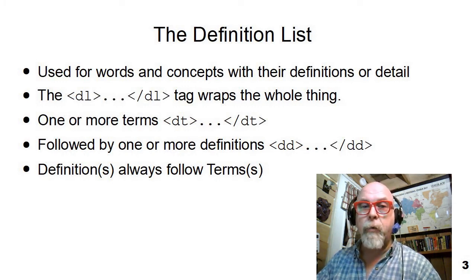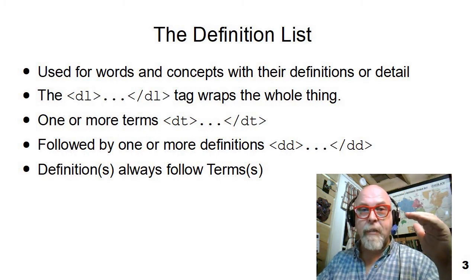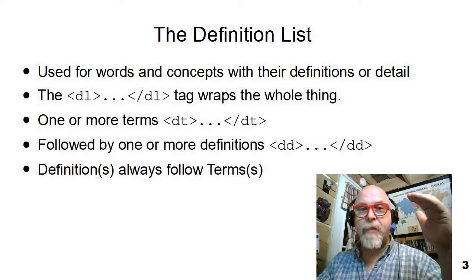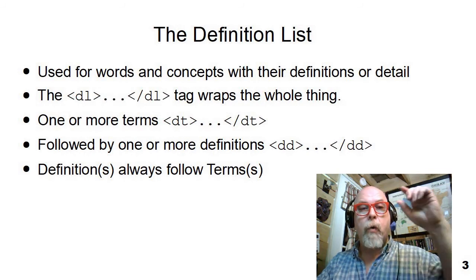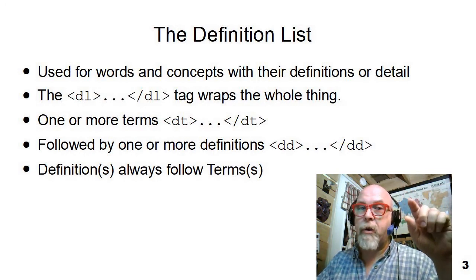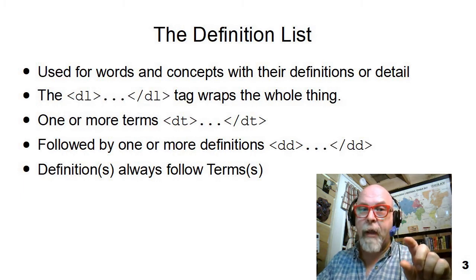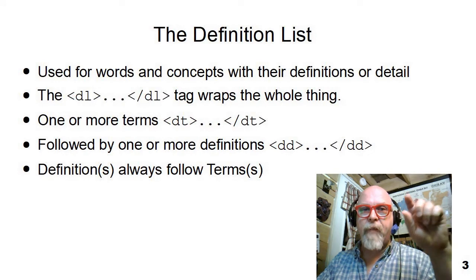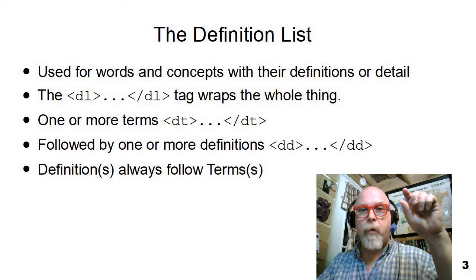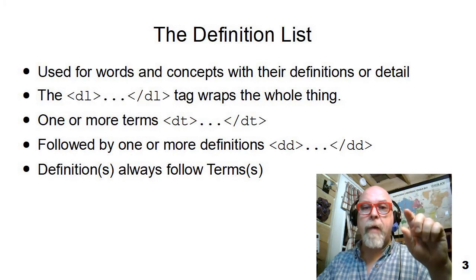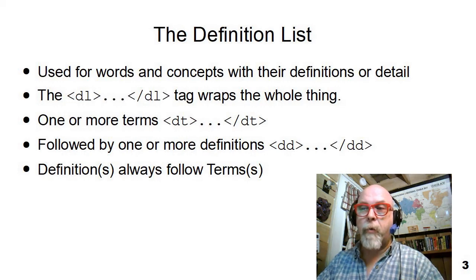Inside the DL, we will see a series of DTs and DDs—definition terms and definition definitions. Always follow one or more terms with one or more definitions, and then one or more terms followed by one or more definitions. They have to follow that order within the DL tag. You have one or more DTs followed by one or more DDs, followed by one or more DTs, followed by one or more DDs.